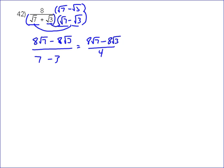You can always factor 4 out of this top, 4 times 2√7 minus 2√3. And I factored out the 4 because now these can cancel out.